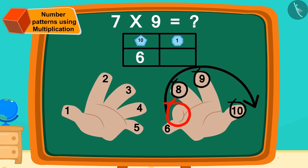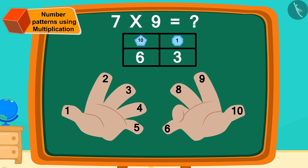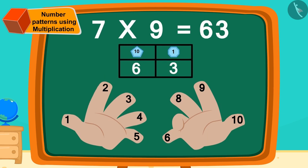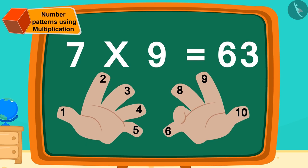Now, how many fingers are there on the right side of the bent finger? Three. We will write this in a ones digit place like this. We found our answers. Seven times nine equals sixty-three.